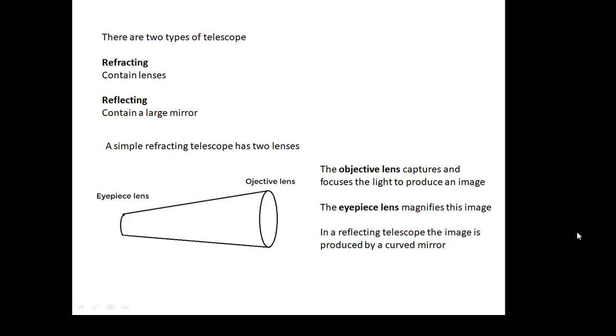And in a reflecting telescope, there isn't an objective lens. It's a mirror. There's an objective mirror, a large mirror, a curved mirror.